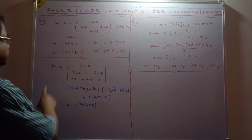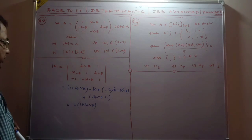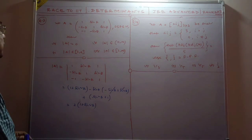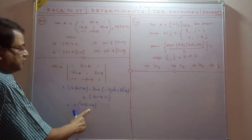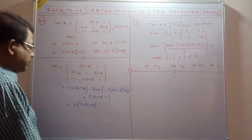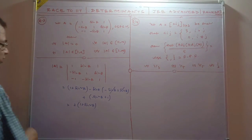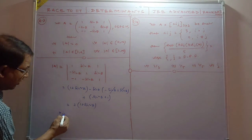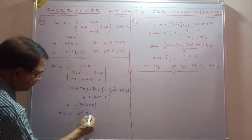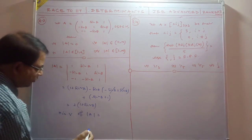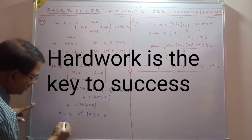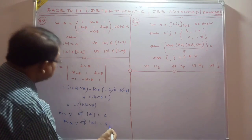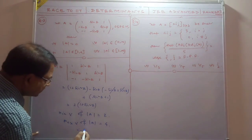Since determinant of A equals 1 plus sin squared theta, and theta ranges from 0 to 2 pi, sin squared theta ranges from 0 to 1. Therefore the minimum value of the determinant of A is 1 plus 1 equals 2, and the maximum value is 1 plus 1 times 2 equals 4. Wait — minimum is when sin squared theta equals 0, giving 1, but so that is 2, and maximum when sin squared theta equals 1 gives 1 plus 1 equals 2, so actually det(A) belongs to [2, 4]. So [2, 4] is the right answer.